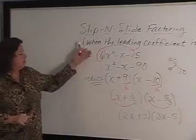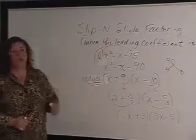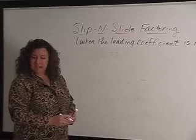So we now have this trinomial factored. It was made easier with the slip and slide method. This time I'm going to choose 12x squared plus 25x plus 7.